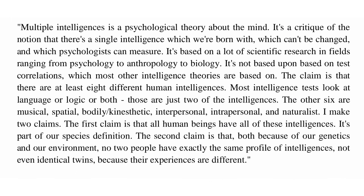Multiple intelligences is a psychological theory about the mind. It's a critique of the notion that there's a single intelligence which we're born with, which can't be changed, and which psychologists can measure. It's based on a lot of scientific research in fields ranging from psychology to anthropology to biology. It's not based on test correlations, which most other intelligence theories are based on. The claim is that there are at least eight different human intelligences. Most intelligence tests look at language or logic or both — those are just two of the intelligences.